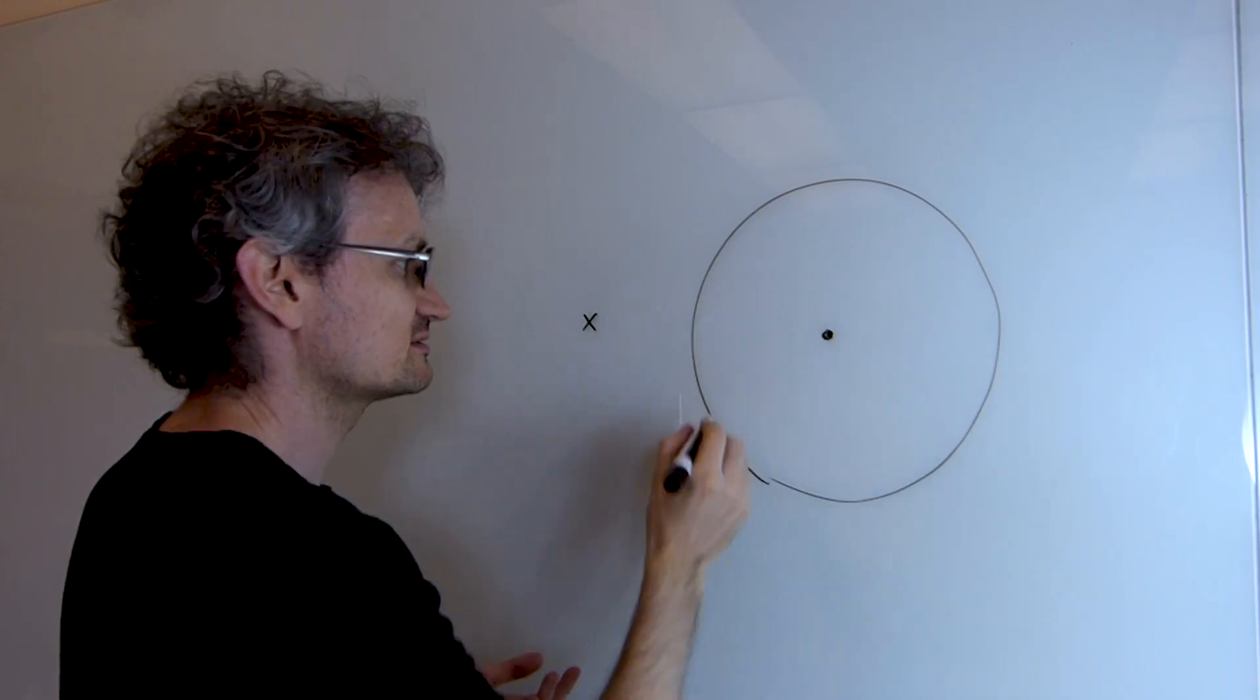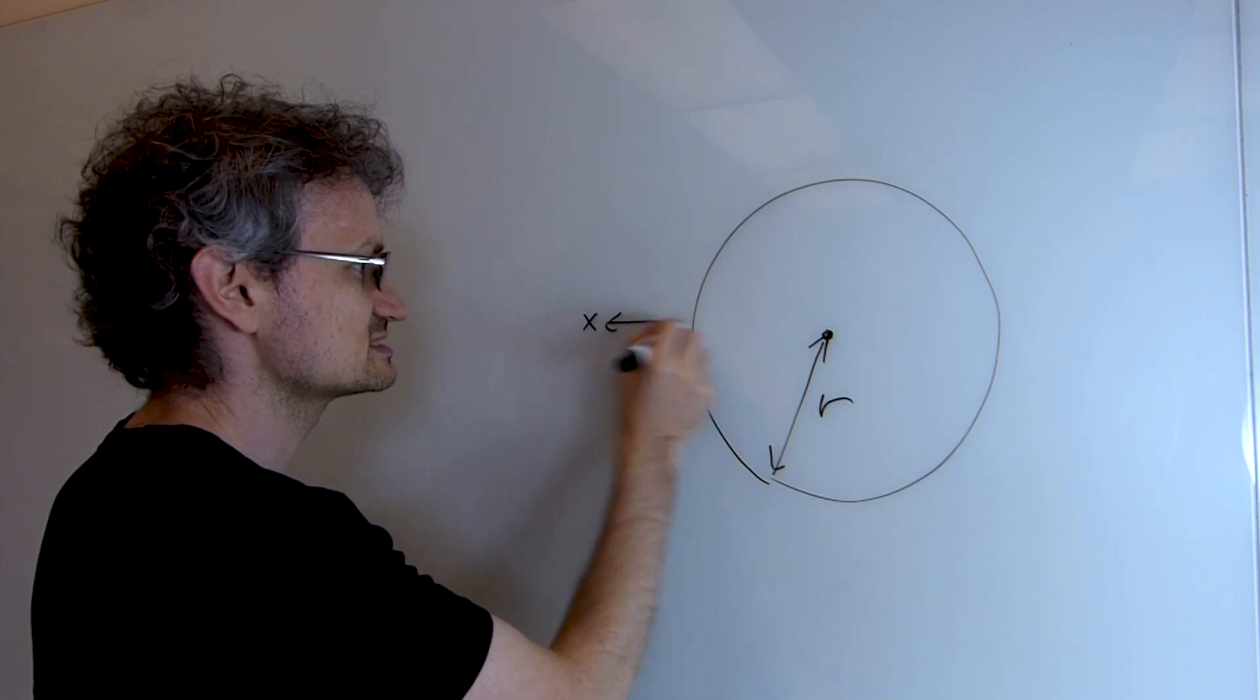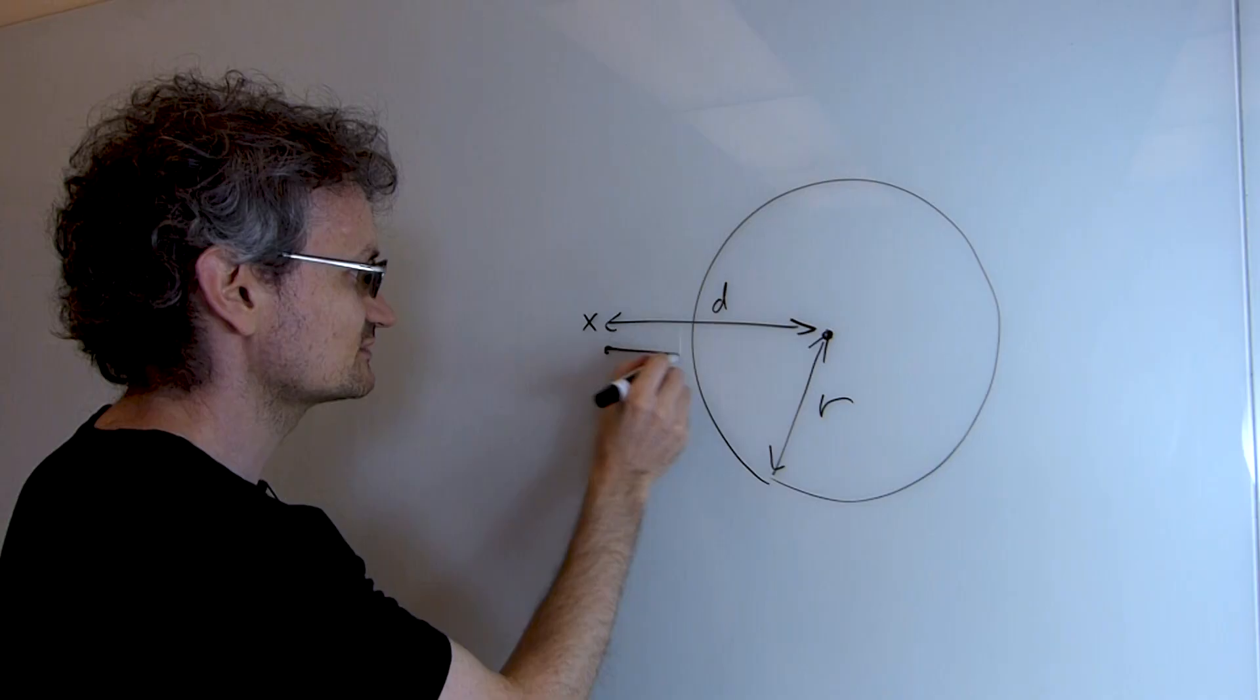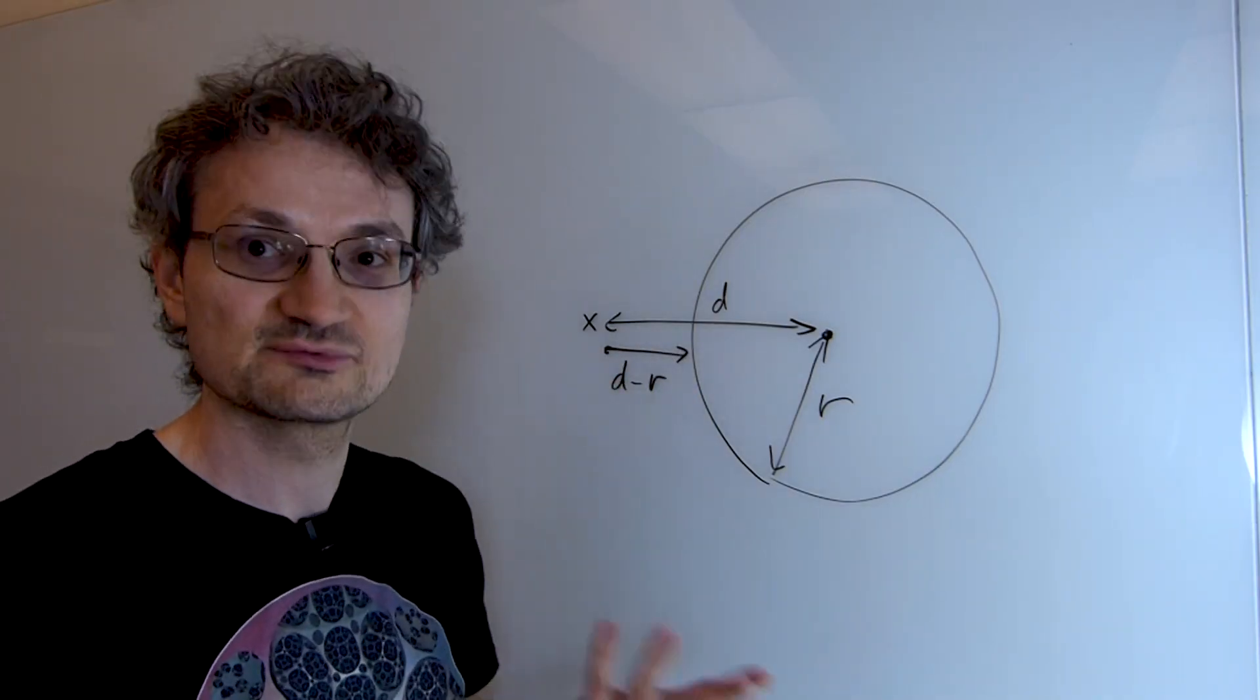If I've got a sphere radius r and I am a distance d away from the center of the sphere, then the signed distance function returns d minus r, which is how far we are away from the surface of the sphere.